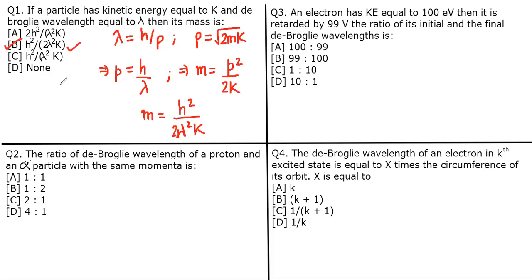Now let's read the second question: the ratio of de Broglie wavelength of a proton and an alpha particle with the same momentum. Students sometimes get confused because the mass of a proton is approximately 1 amu and the mass of an alpha particle is approximately 4 amu.